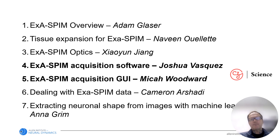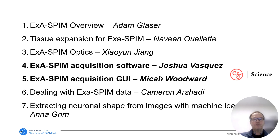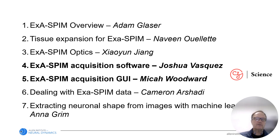Making EXOSPIM practical for routine imaging and discoveries required additional innovations. Imaging entire brains implies huge data sets — up to 100 teravoxels per brain. To image these gigantic image volumes in finite time, we need to acquire images at unprecedented speeds. The software developed for this purpose, dubbed Acquire, is critical for EXOSPIM. Acquire was developed by Adam Glaser, Joshua Vasquez, and Micah Woodward, together with leading contributions from Nathan Clark and others in the Chan Zuckerberg Institute imaging group. Acquire allows us to image whole brains 10 times faster than previous approaches and will be useful for control of microscopes in general.